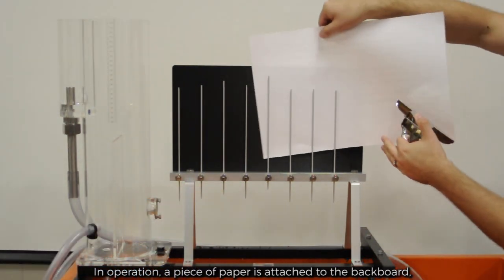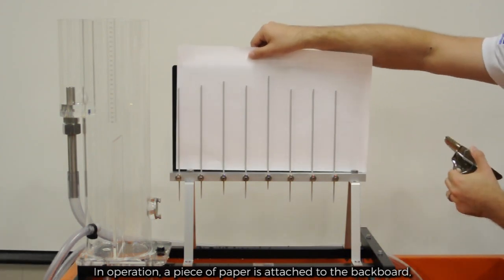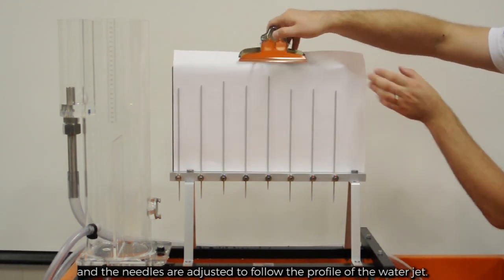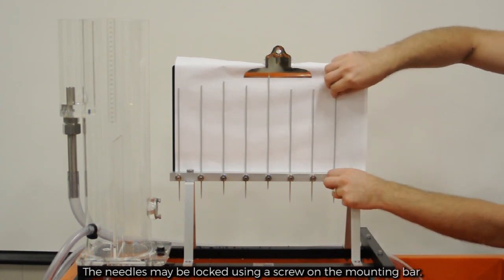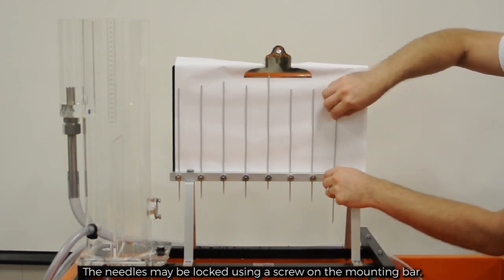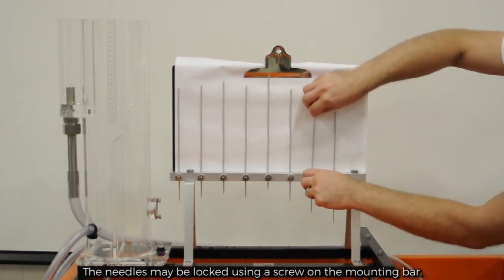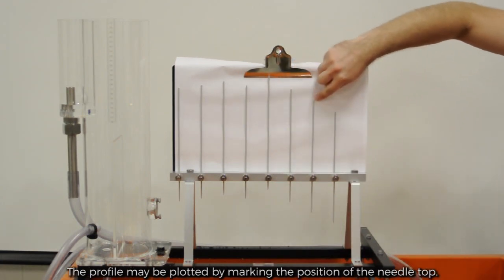In operation, a piece of paper is attached to the backboard and the needles are adjusted to follow the profile of the water jet. The needles may be locked using a screw on the mounting bar. The profile may be plotted by marking the position of the needle top.